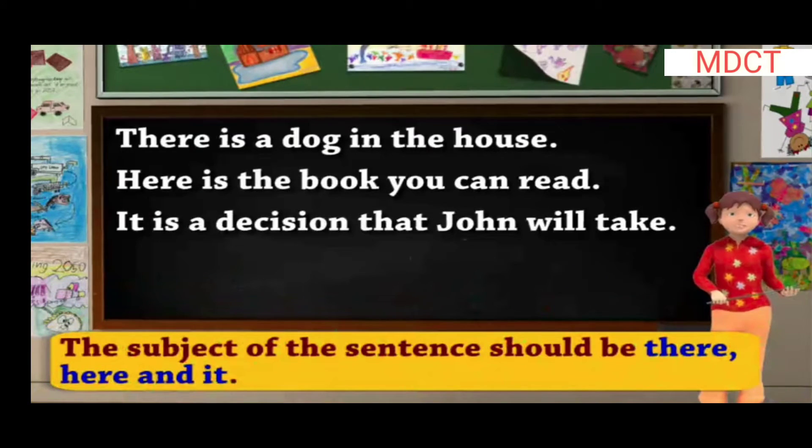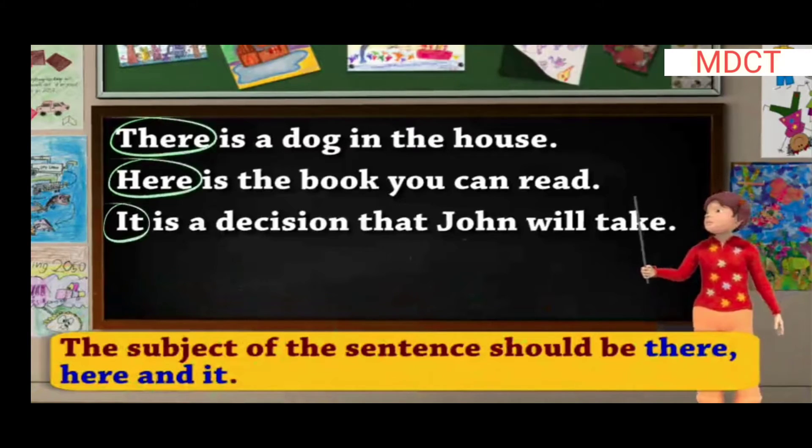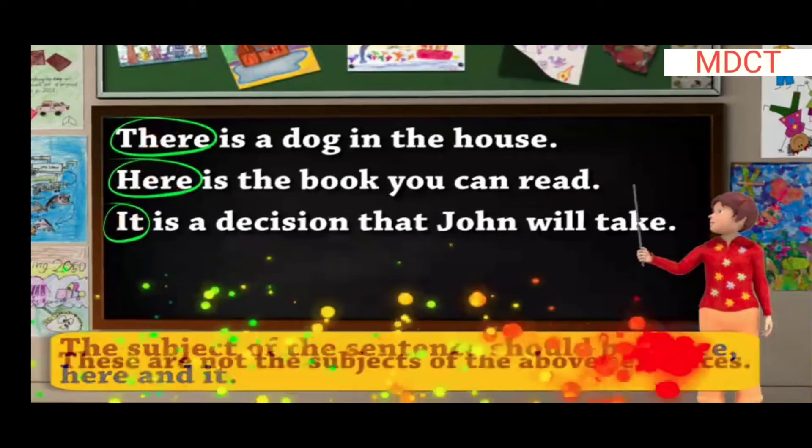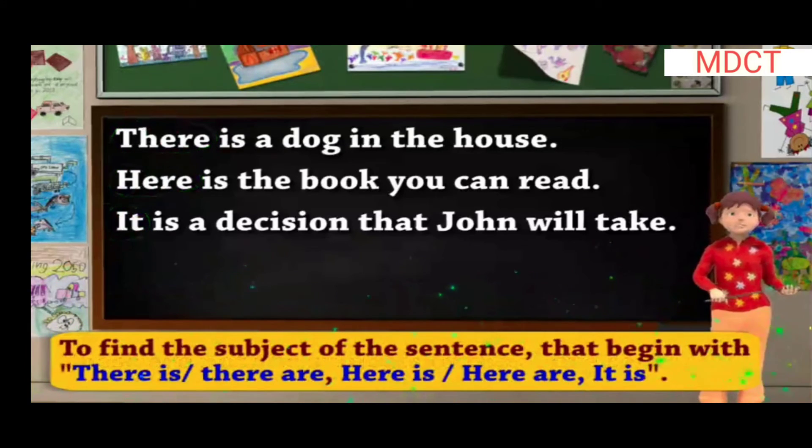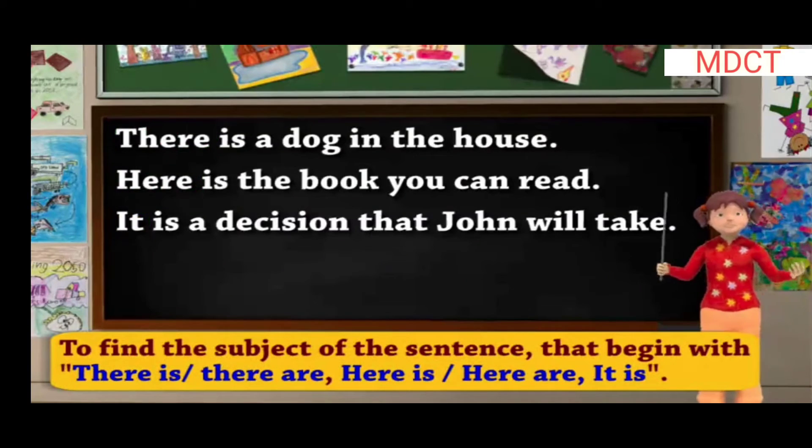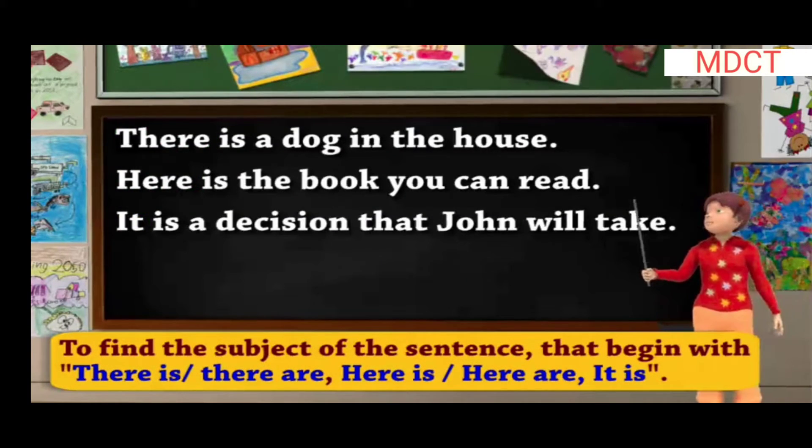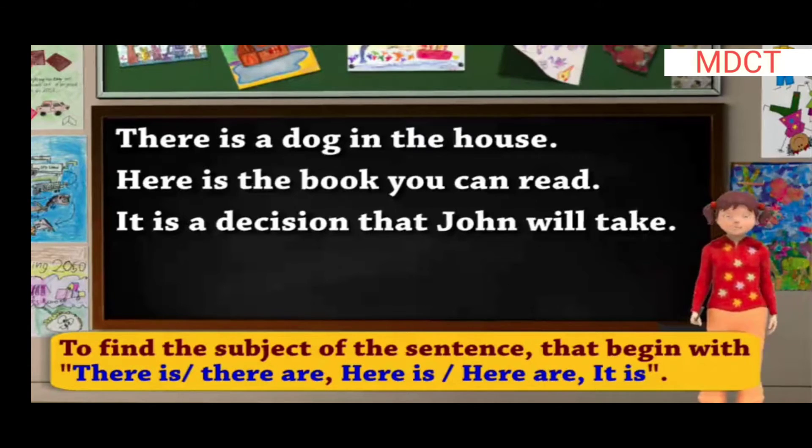Logically, the subject of the sentence should be there, here, and it. But that is wrong. These are not the subjects of the above sentences. To find the subject of the sentence that begins with there is or there are, here is or here are, it is, we should follow these rules.